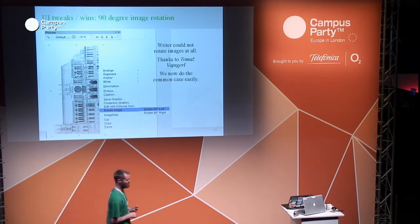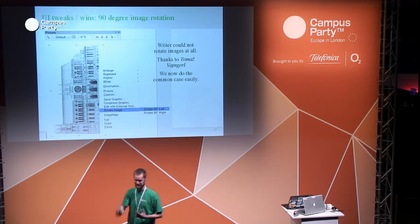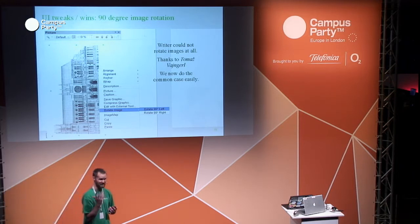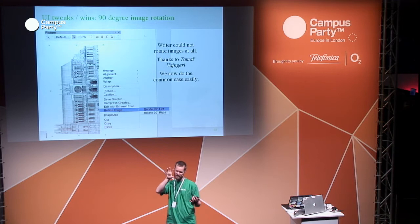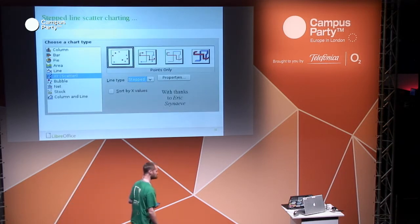Another thing we embarrassingly failed to do for years is allowing people to rotate images in Writer — particularly bad when you insert a photograph that's the wrong way around. We fixed that. Developer Tomasz also did the EXIF work so images should automatically be the right way up. We can now rotate 90 degrees. This is a perfect example of the perfect being the enemy of the good — everyone wanted arbitrary fractional rotation with complex text reflow, so no one ever did it. But 90-degree rotation turned out to be quite easy, so it's done.